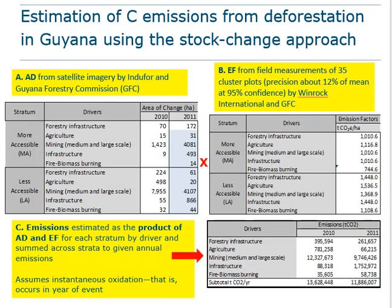This slide has details on the forest strata, divided according to accessibility in Guyana's case, and then subdivided by deforestation driver. Activity data for each stratum were then multiplied by their corresponding emission factor to get the total emissions per forest stratum for the 2010–2011 time period.